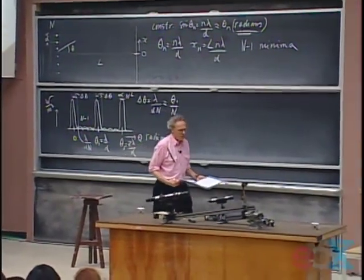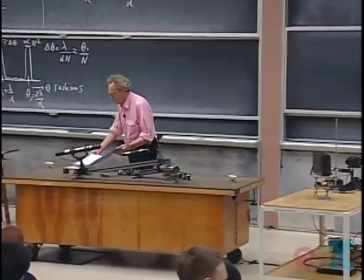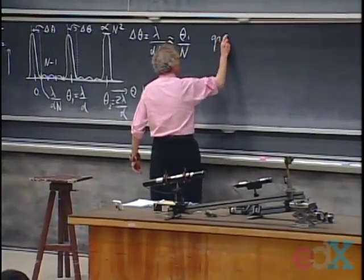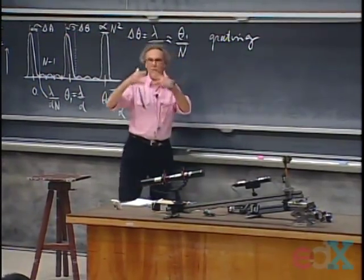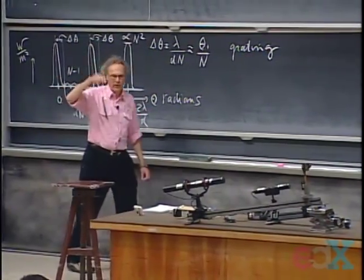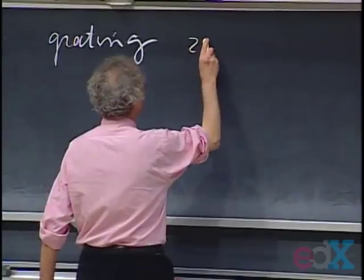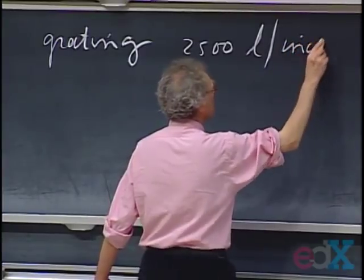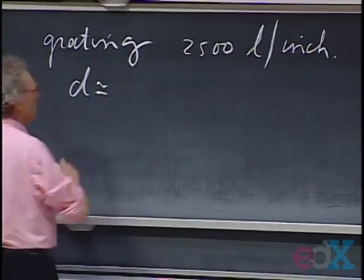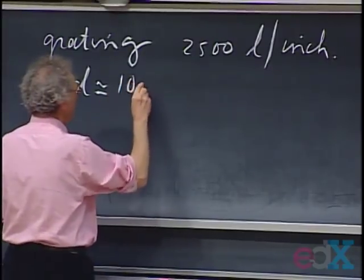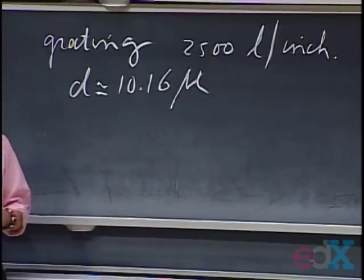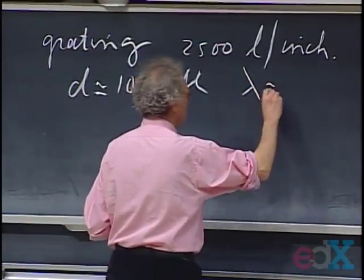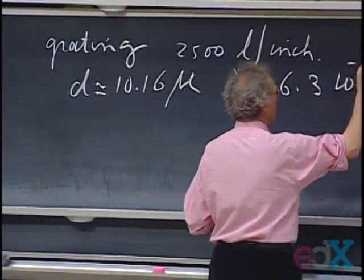I want to demonstrate this using our red laser with a diffraction grating — a specially prepared transparent plate with grooves in it. The one I'll use has 2,500 grooves per inch. That means the separation D between two adjacent grooves is about 2.16 microns. A micron is 10 to the minus 6 meters. The wavelength of the red laser is about 6.3 times 10 to the minus 7 meters.